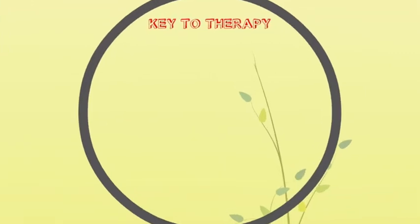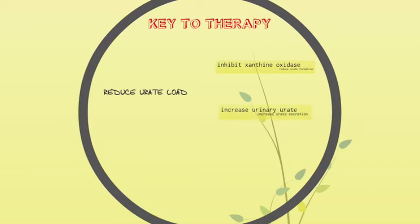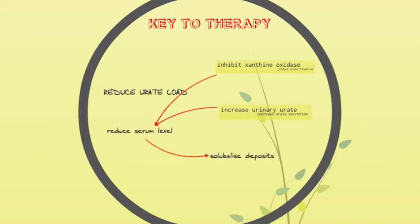The key to therapy is reversing that process of pathology — reducing the uric acid load. You can do this either by inhibiting xanthine oxidase or by increasing urinary urate levels, particularly in patients with normal renal function. As a result of reducing serum uric acid, tophi are in a milieu of reduced serum uric acid and begin to solubilize and consequently are reabsorbed.